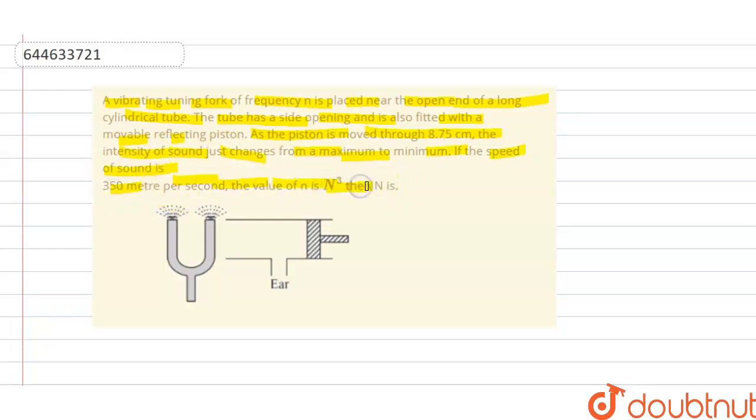If the speed of sound is 350 meter per second, the value of n is n cube, then find n. So this is the vibrating tuning fork, frequency n is here, and these are cylindrical tubes here. The solution of this question is...